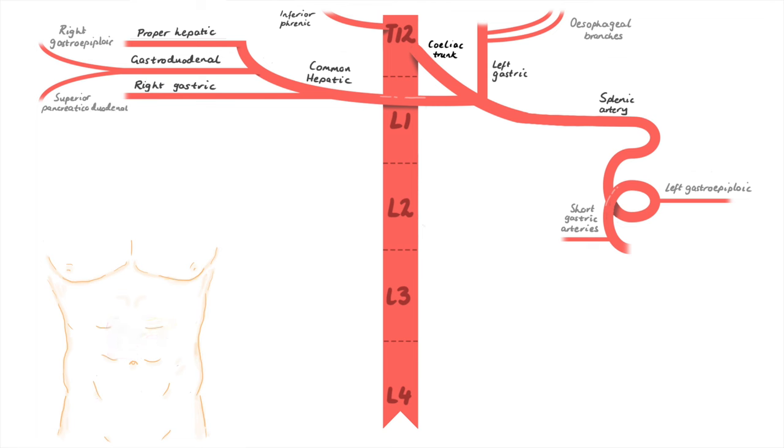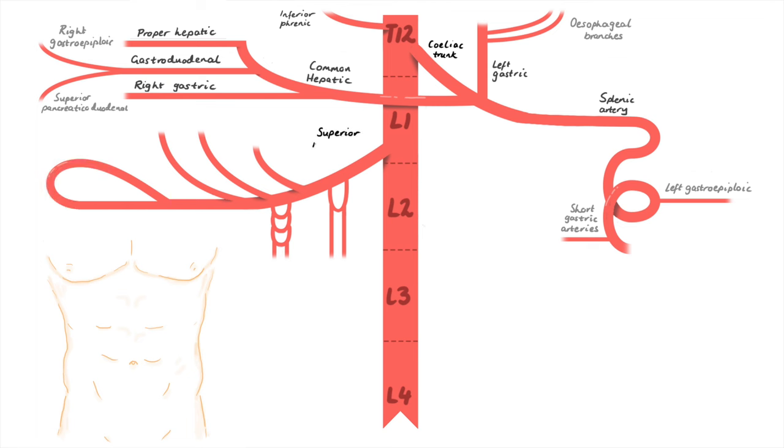The main branches of the abdominal aorta run down in the order CSI. C for celiac, S for superior mesenteric artery at the level of L1. First of all, it gives off arteries for the second section of the small intestine. These have few arcades and long vasa recta. They are the jejunal arteries.